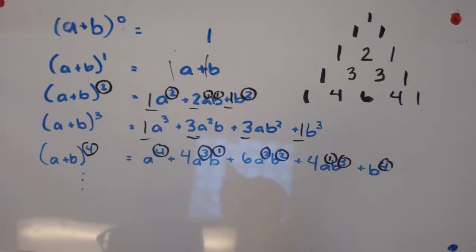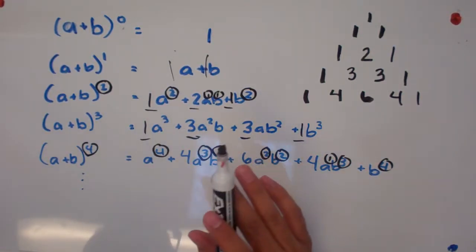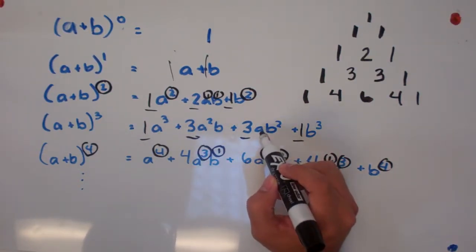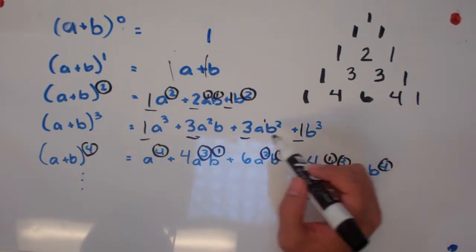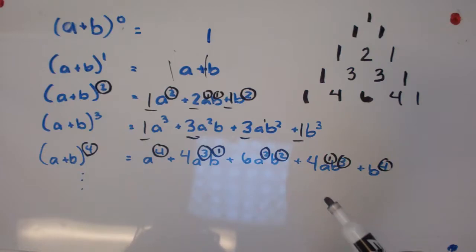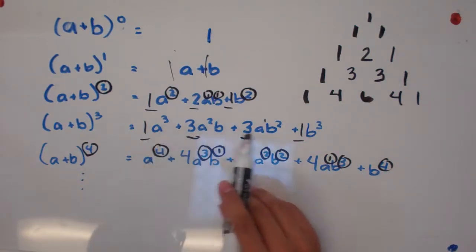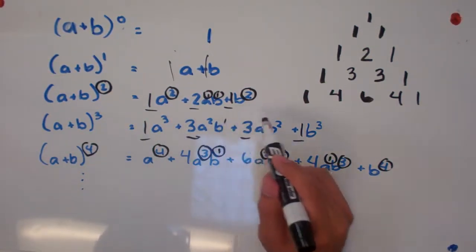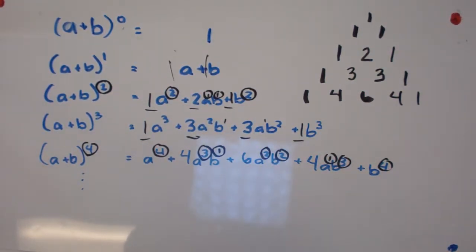Another pattern we see is looking at the a's. Looking at a plus b to the third, the a powers are: a to the third, a squared, just a, and then no a. So the a powers decrease. Meanwhile the b powers actually increase — no b, then b to the first, b squared, and then b to the third. So b powers increase.